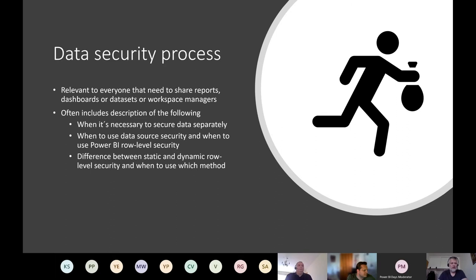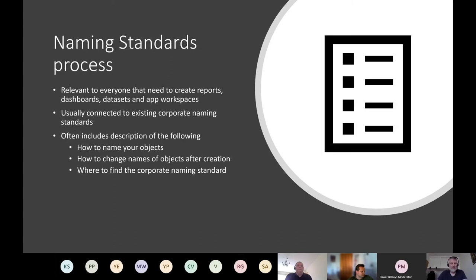The data security section of the process talks about row-level security, but also about when to use data source security — for example, with Analysis Services, SAP BW, and DirectQuery. It covers when to use pass-through security versus Power BI row-level security, and the difference between static and dynamic row-level security, ideally with references to how-to documents as well.